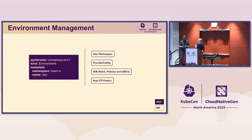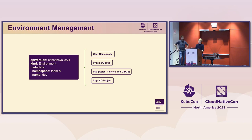Once we've created the tenant, we're able to claim environments — that's why the tenant didn't have a namespace, but now we have a Team A namespace. For an environment called 'dev,' the composition creates a namespace where the user will consume the platform, builds the provider config to access the right AWS account, does baseline setup on the account — creating roles, policies, connecting to IDCs — and finally configures ArgoCD projects.